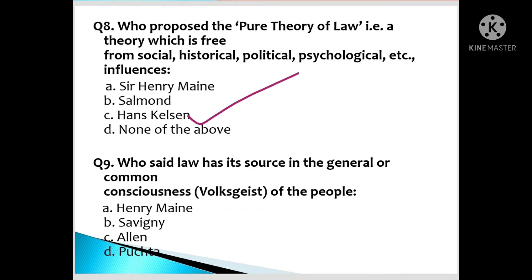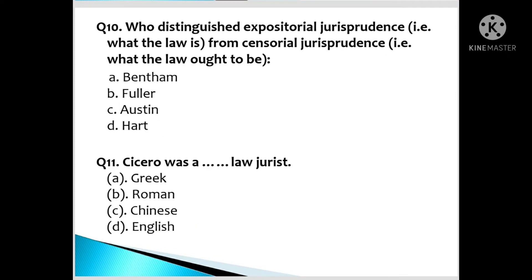Question number 9: Who said law has its source in the general common consciousness of the people? A. Henry Maine, B. Savigny, C. Ellen, D. Puchta. Question number 10: Who distinguished expositorial jurisprudence — that is, what the law is — from censorial jurisprudence — that is, what the law ought to be? A. Bentham, B. Fuller, C. Austin, D. Hart.